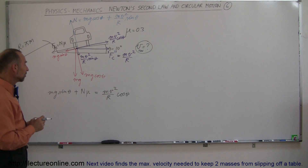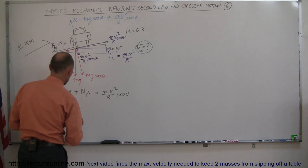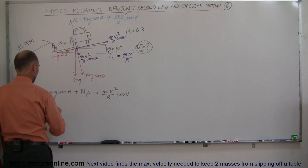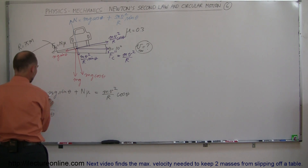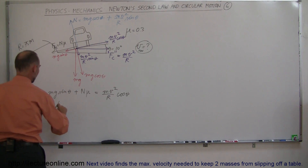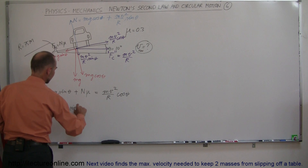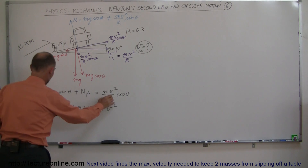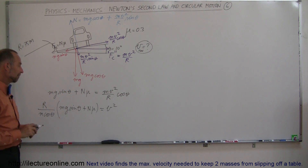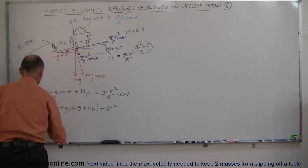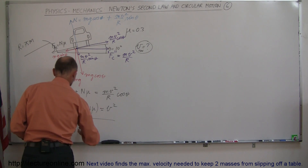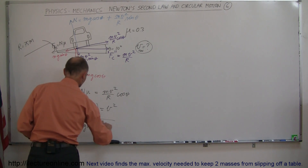Let's solve this equation for V. We multiply both sides by R, divide both sides by m and cosine theta. So we bring m to the denominator, R to the numerator, and cosine theta to the denominator, and multiply all that times the left side: mg sine theta plus the normal force times mu. That equals V². Taking the square root of both sides gives V equal to the square root of R divided by m cosine theta, multiplied by mg sine theta plus N times mu.